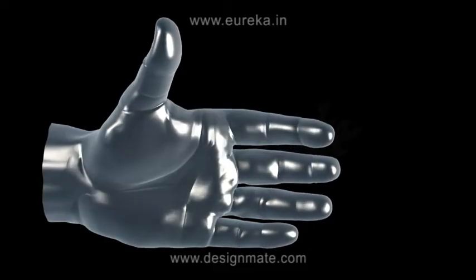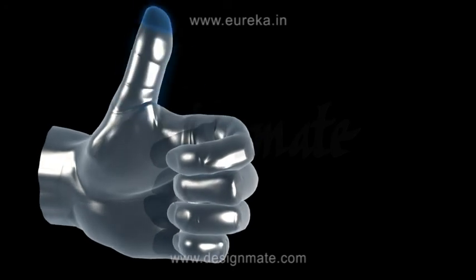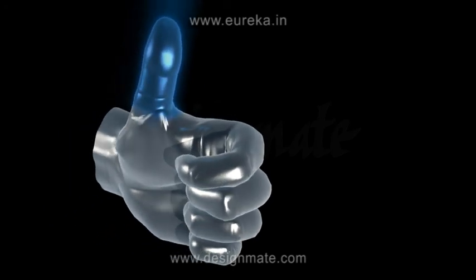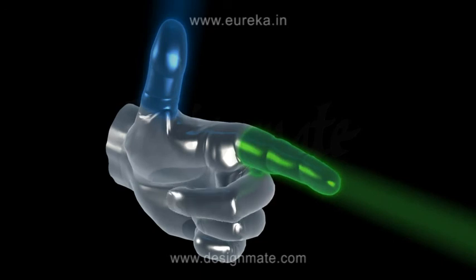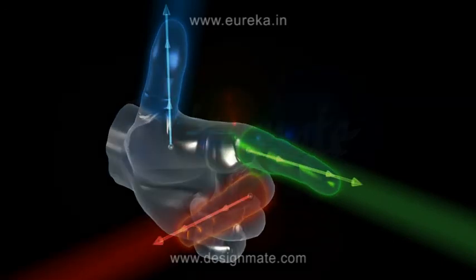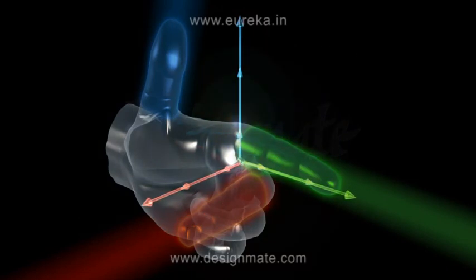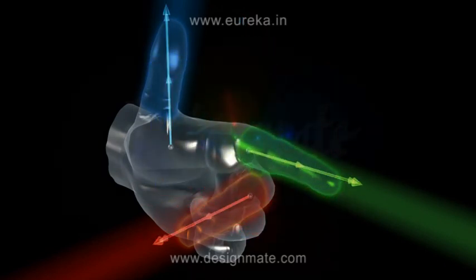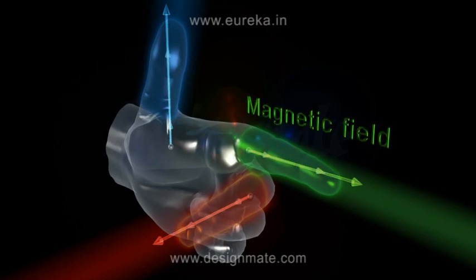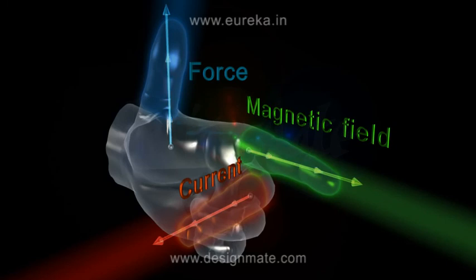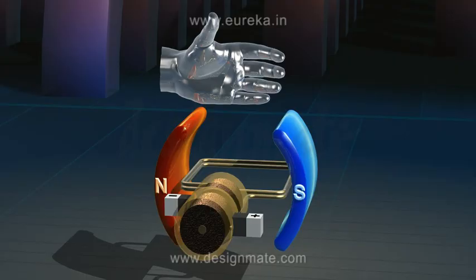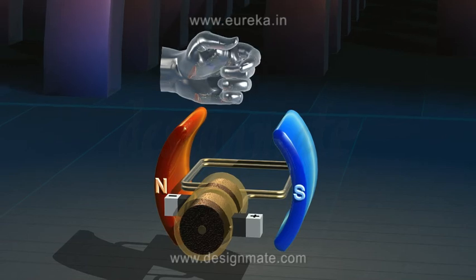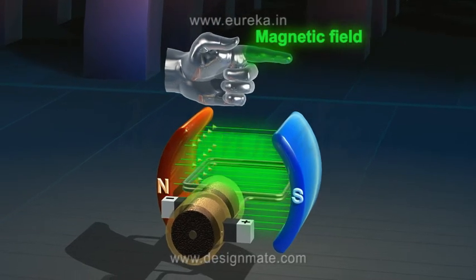According to this rule, if you arrange your left hand in such a way that your thumb, first finger, and second finger are all pointing at right angles to one another, and if your first finger is pointing in the direction of magnetic field, your second finger is pointing towards the direction of current, then the thumb would give the direction of the force. Let's check out the left-hand rule once more against the animation.